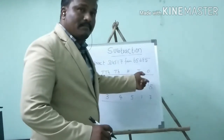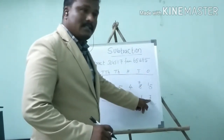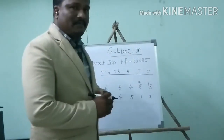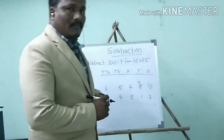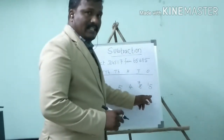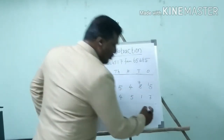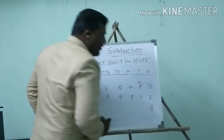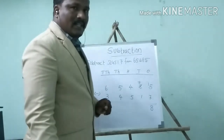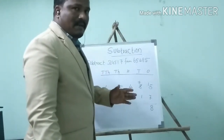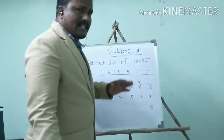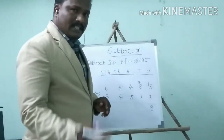Now the minuend is a bigger number than the subtrahend, so now we can subtract. 15 minus 7 equals 8. Now tens place: 7 minus 1 — we can subtract because minuend is big value and subtrahend is small value. So 7 minus 1 equals 6.